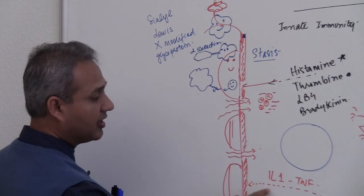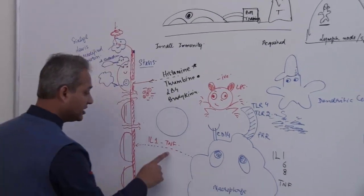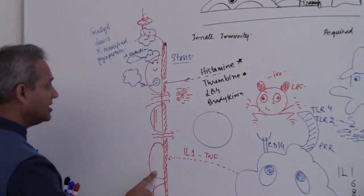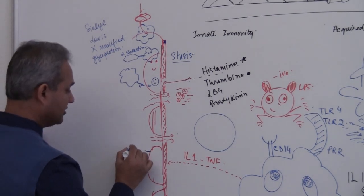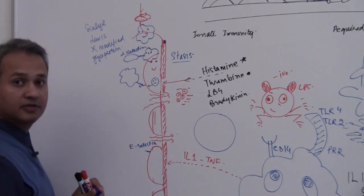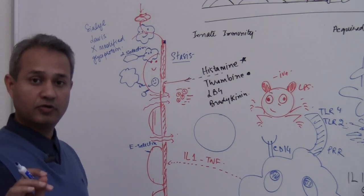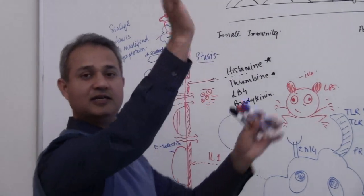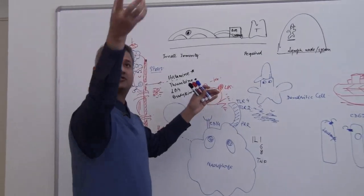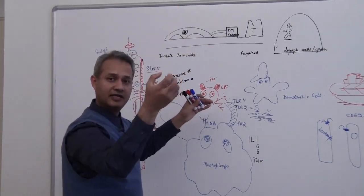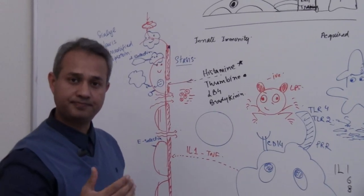On the other hand, when interleukin-1 and tumor necrosis factor, coming from the macrophage — remember macrophage gives IL-1, IL-6, IL-8, TNF, and many others — when they act on the endothelial cell, the endothelial cell displays E-selectin on its surface. So now there is both E-selectin and P-selectin on the surface of the endothelial cell. The endothelial cell grabs the neutrophil, but this grabbing is not a covalent bond — it grabs, slows it down, lets it go, grabs again, slows it down, so the neutrophil rolls while slowing down.